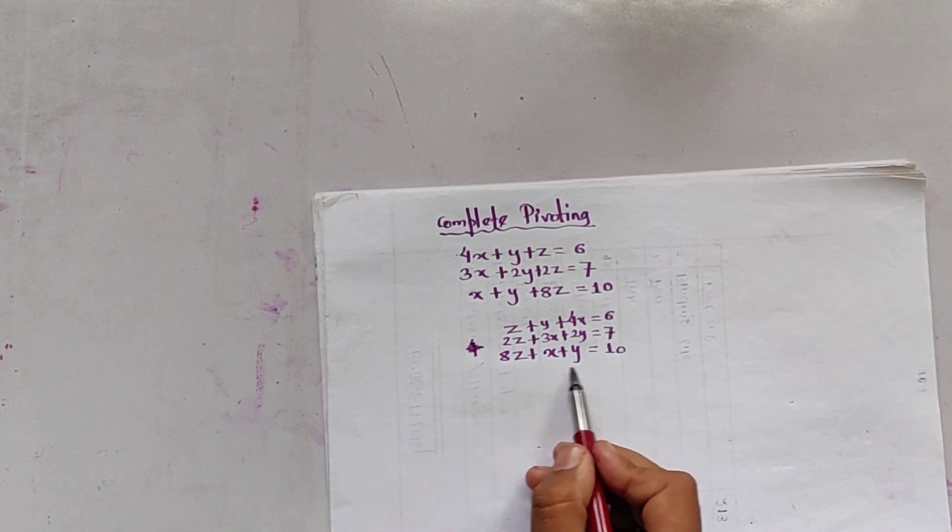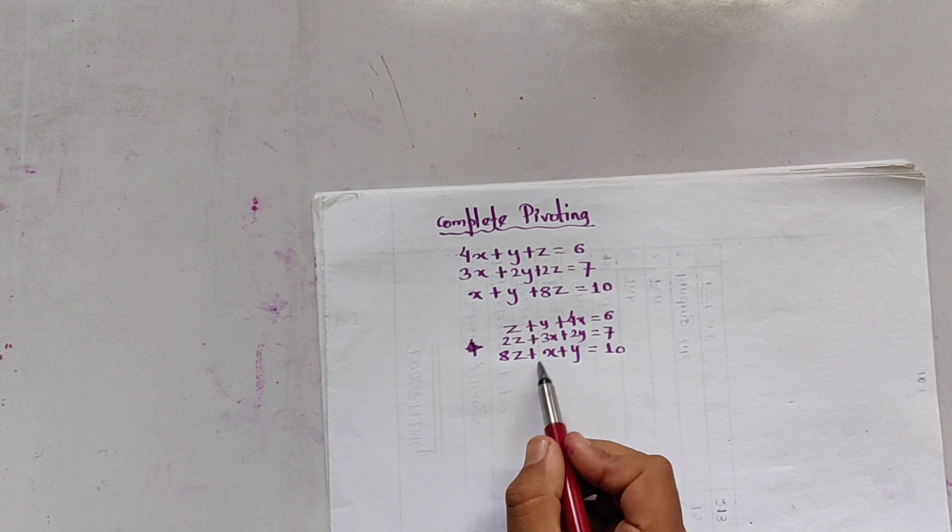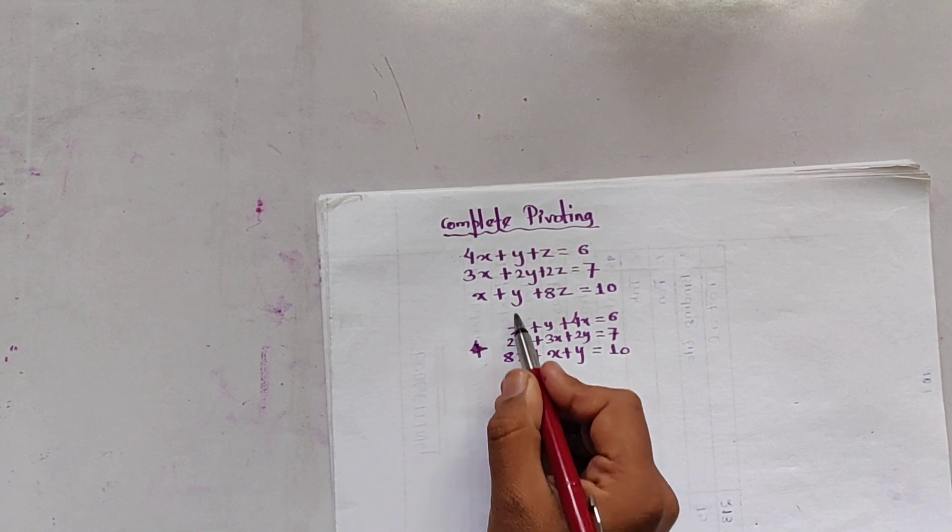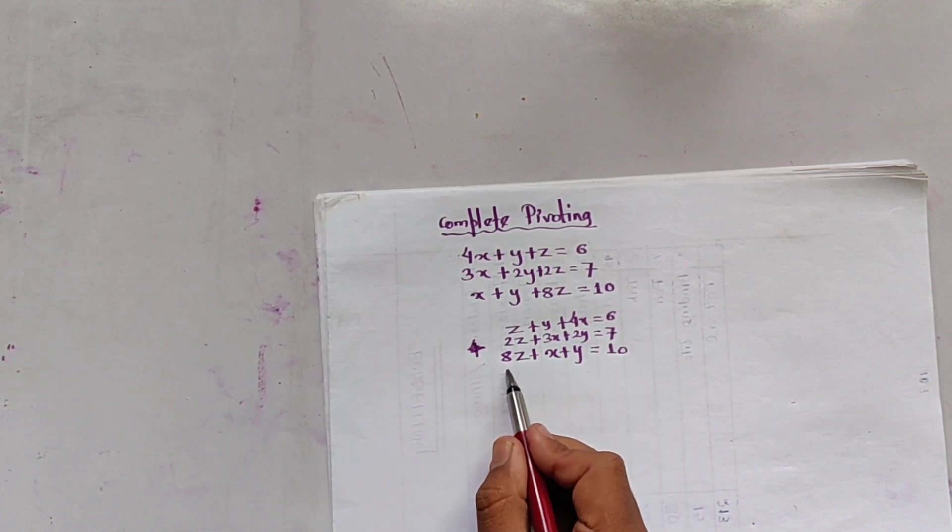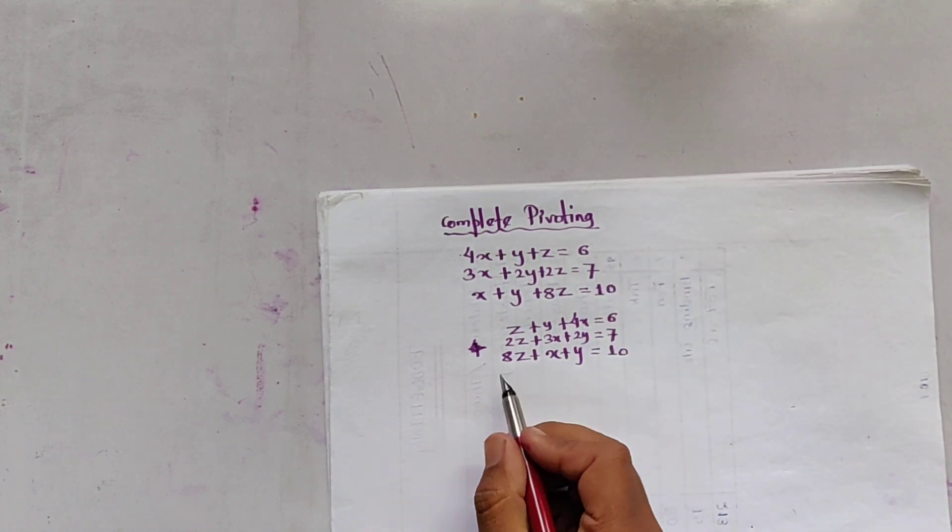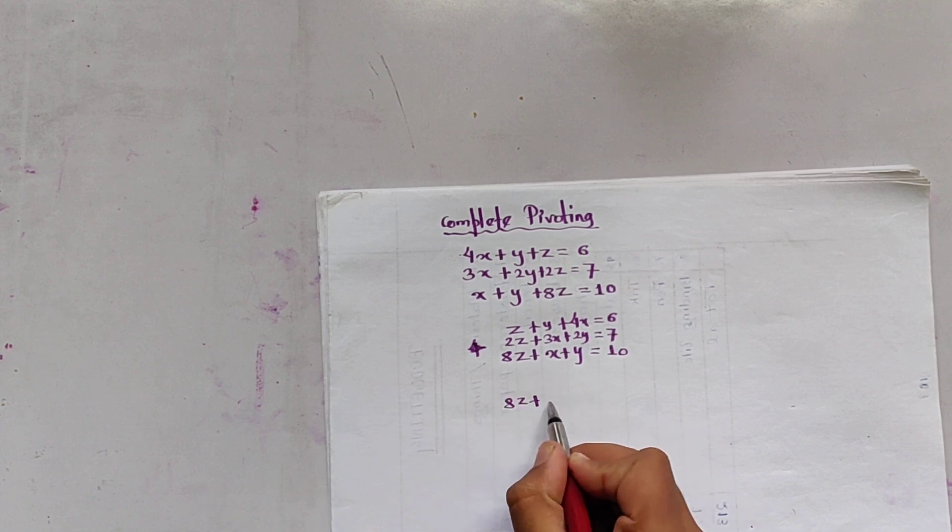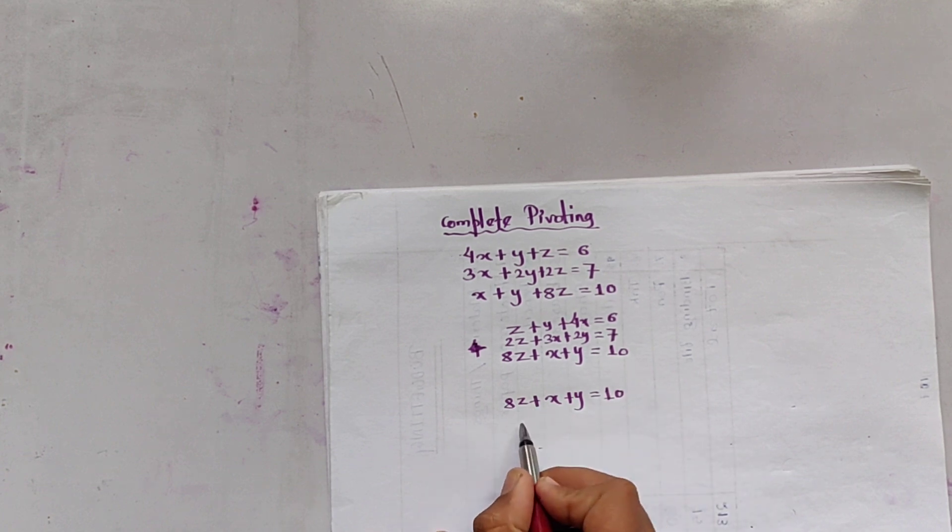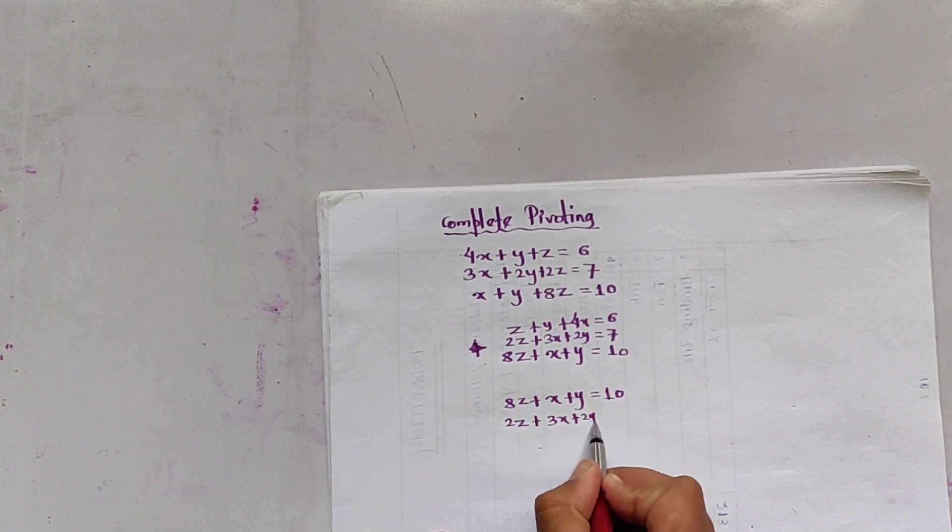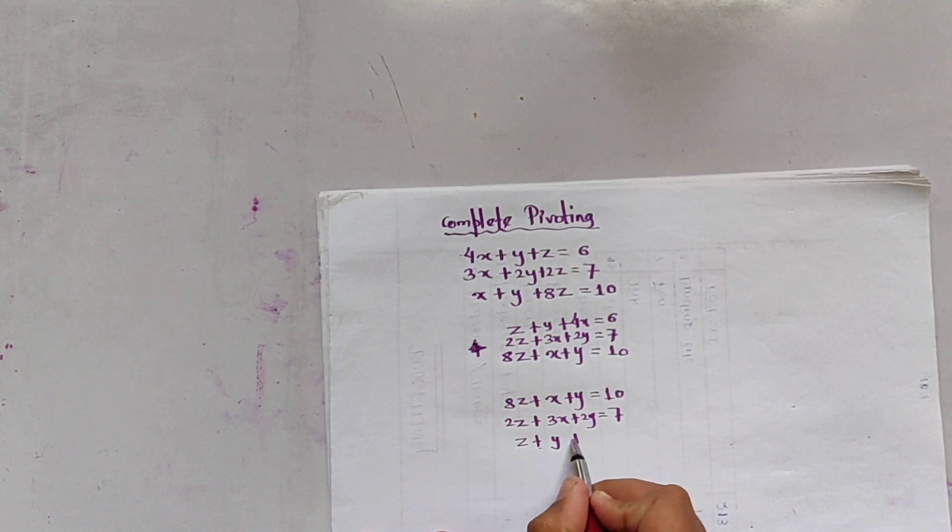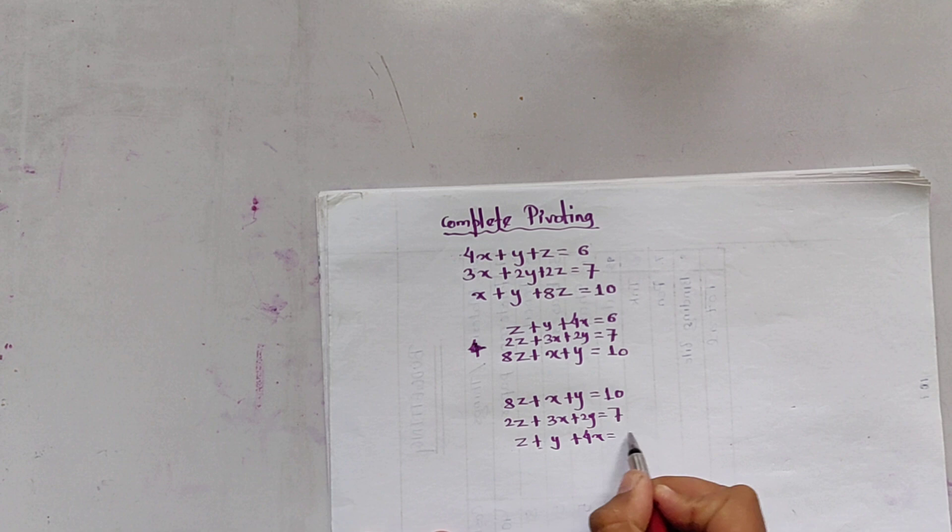Now we check the value whose coefficient is greater. It is z. So now we use partial pivoting. The largest value in this column is 8. So we interchange this equation with the first one. That is 8z plus x plus y equals 10, then 2z plus 3x plus 2y equals 7, and z plus y plus 4x equals 6.